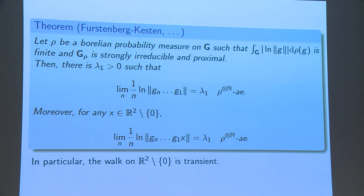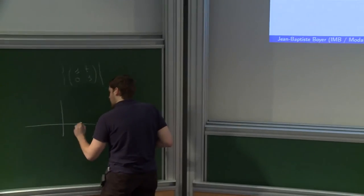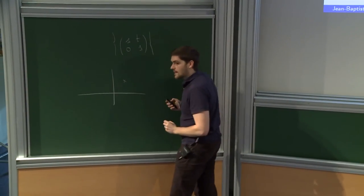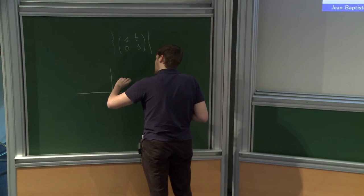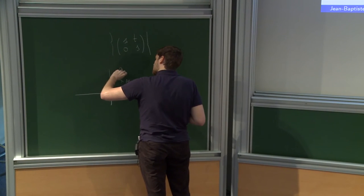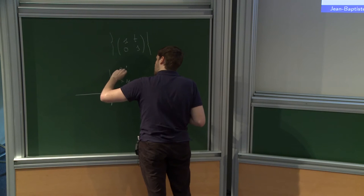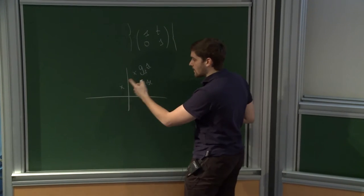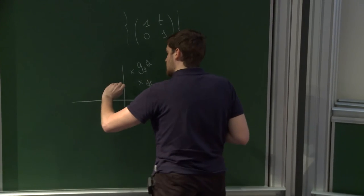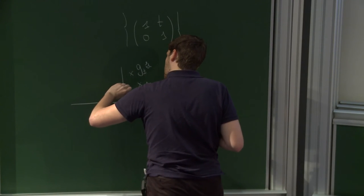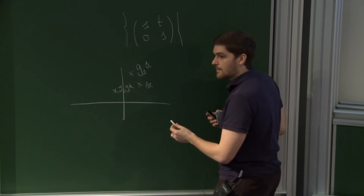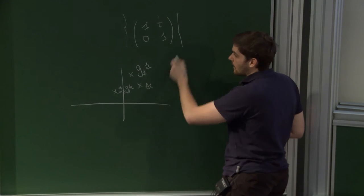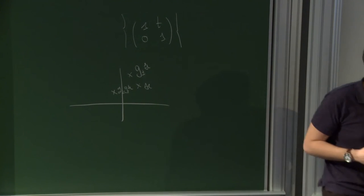In particular, if I look at the walk on R², it is transient. It means that if I take some point x here, I have g₁x somewhere, and the walk can come closer to zero, so this is g₂g₁x. But if I walk long, I will escape to infinity.